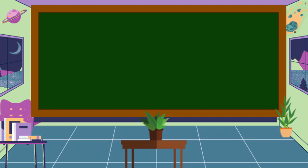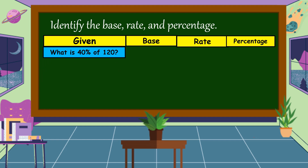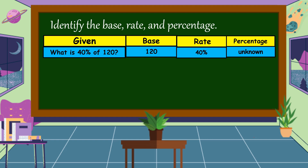Another example: What is 40% of 120? In this question, what are we going to find? We're going to find the percentage — the percentage is the unknown. We don't know yet what the percentage is. The rate is 40%, and the base is 120.